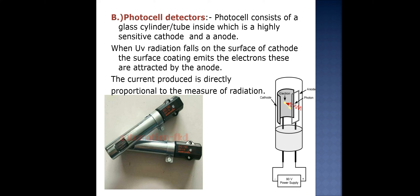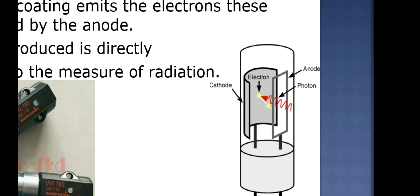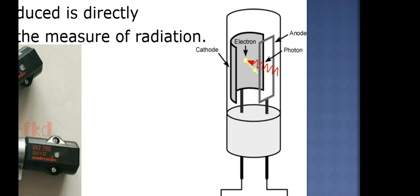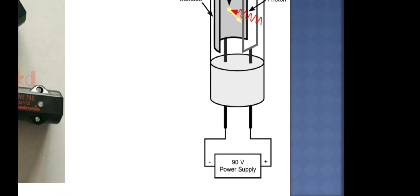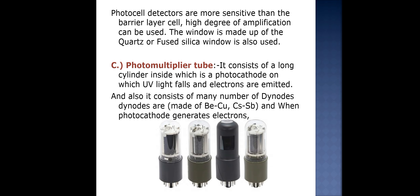The second type of detector is the photocell detector. A photocell consists of a glass cylinder or tube inside which a highly sensitive cathode is placed, with an anode beside it. When light enters the glass and hits the sensitive cathode, electrons are generated from the cathode and move towards the anode, where they are received by the circuit. These electrons are measured, and the current produced is directly proportional to the measure of radiation. Photocell detectors are more sensitive than the barrier layer cell, have a high degree of amplification, and the window is made of quartz or fused silica.